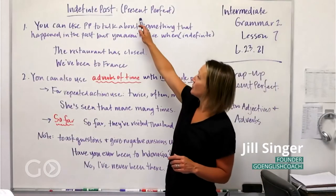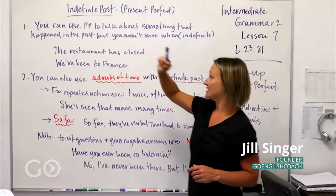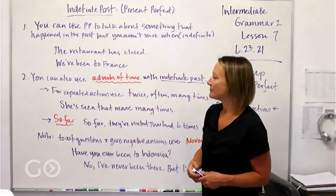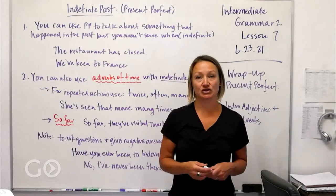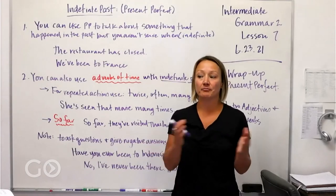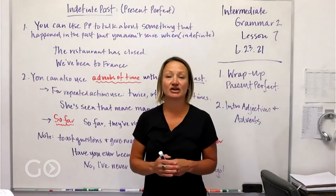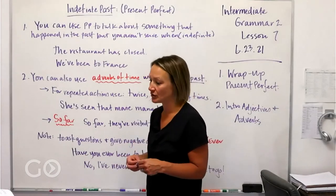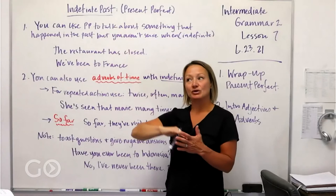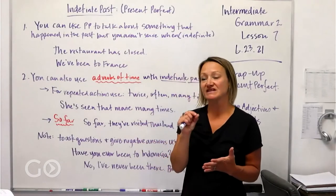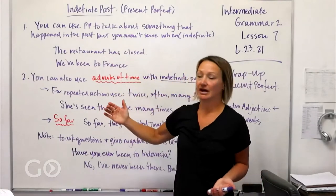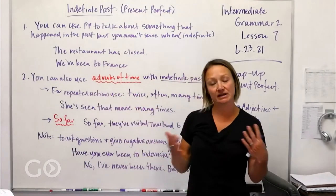One of the things we use present perfect for is an indefinite past. That means we can use present perfect to talk about something that happened in the past and may continue into the present, but in general it started in the past. Indefinite means it's not specific, so we can say things like 'the restaurant has closed' or 'we've been to France.'